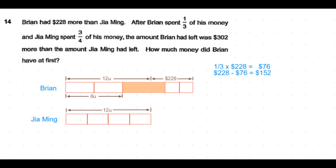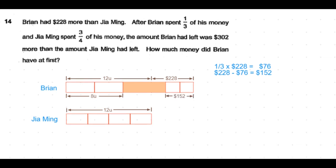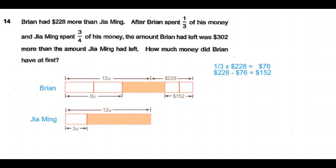So the money that is left with Brian is 8 units plus $152. Jia Ming spent 3/4 of his money, so 3/4 of 12 units is 9 units. So the remaining 1/4 is 3 units, which is what is left with Jia Ming.